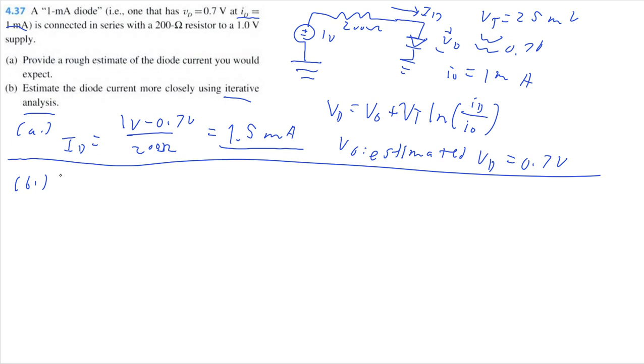We already calculated a current, so we can go straight to calculating or estimating our new diode voltage. So, 0.7 volts plus 0.025 volts multiplied by the natural log of 1.5 milliamps divided by 1 milliamp.